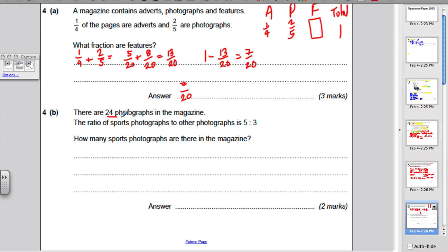4b. There are 24 photographs in the magazine. The ratio of sports photographs to other photographs is 5 to 3. How many sports photographs are there altogether? Well, you know there are 24 photographs in the magazine, and there are in total 8 parts to this ratio. So, the first thing you need to do is you say 8 parts equals 24 photos.